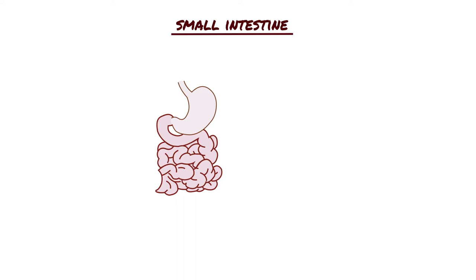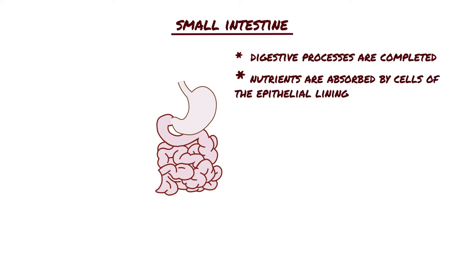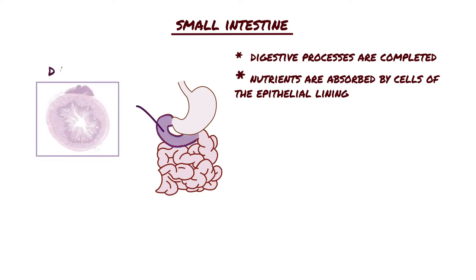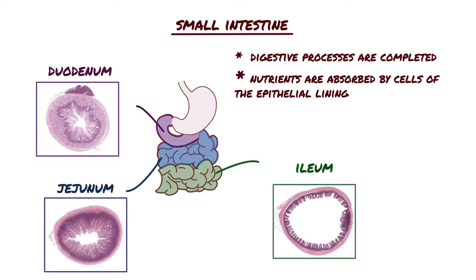The small intestine is the site where the digestive processes are completed and where the nutrients are absorbed by cells of the epithelial lining. The small intestine consists of three segments: the duodenum, jejunum, and ileum.